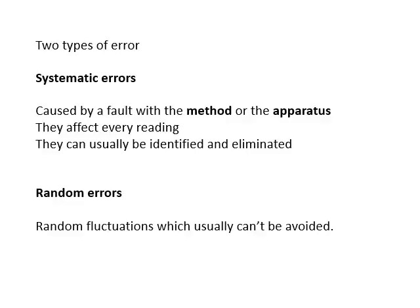Two types of error: there are systematic errors and there are random errors. Systematic errors - there's something wrong with the system. The system is your method or the equipment that you're using. What's characteristic about them is that they affect every reading. Because of that, you can usually identify them and eliminate them.